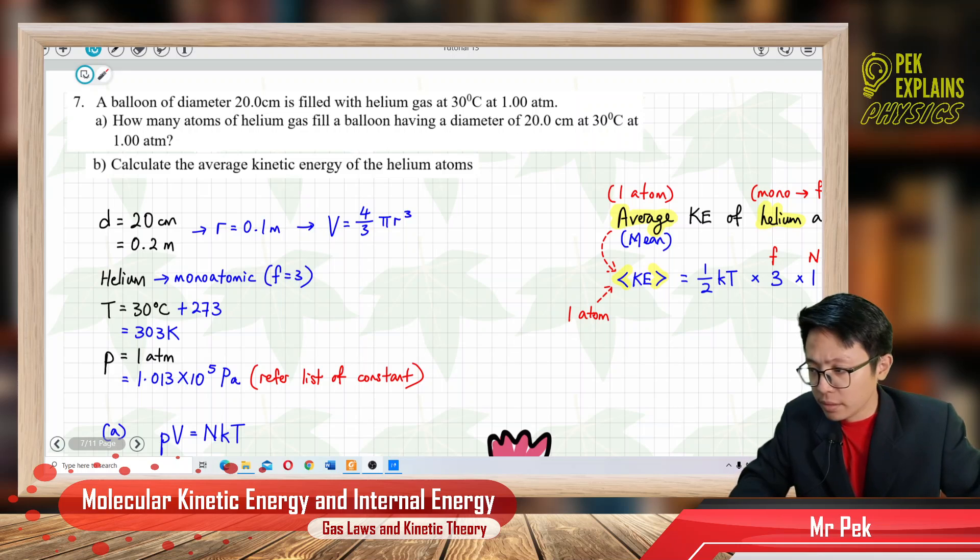Tutorial question 7. A balloon of diameter 20 cm is filled with helium gas at 30 degree Celsius at 1 atmospheric pressure. Part A: How many atoms of helium gas fill the balloon?